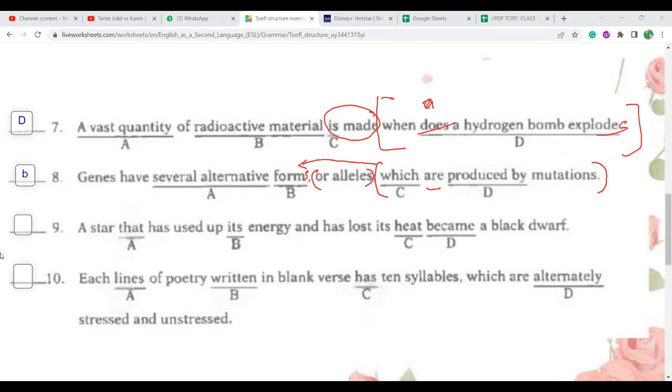Naren. Okay, which D, it should be? Becomes. Becomes. Because this is a factual sentence, right? Present time. A star that has used up its energy and has lost its heat becomes a black dwarf. Dwarf, a small object. The subject is long. A star, mainly a star, but that has is actually a member of star. This is an adjective clause. So this very long part is actually a member of the subject. So a star becomes a black dwarf. Okay, continue.